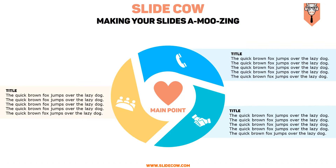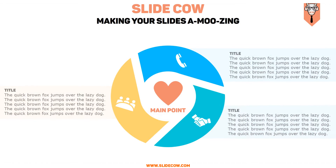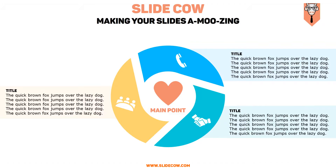Welcome back to another video from Slide Cow. My name is Yoyo and together we're going to make your slides amusing. This week's video is going to be super fun — we're going to make a three-point circle infographic on PowerPoint. The main point of this slide is to demonstrate three sub-points of a main point. It's a good way for your audience to digest information, and keep in mind these points can be whatever you'd like but they have to correlate to one another.